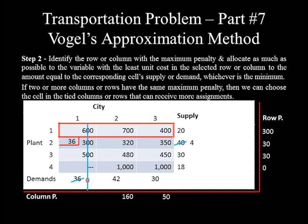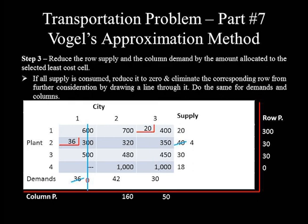The smallest of the two undeleted costs in row 1 is 400. Supply corresponding to this cell is 20 and demand is 30, so the amount allocated is 20 (the smaller value). Subtracting 20 from demand reduces it from 30 to 10, and subtracting 20 from plant 1's supply of 20 reduces it to zero. Row 1 must be crossed out because plant 1 supply is fully consumed.